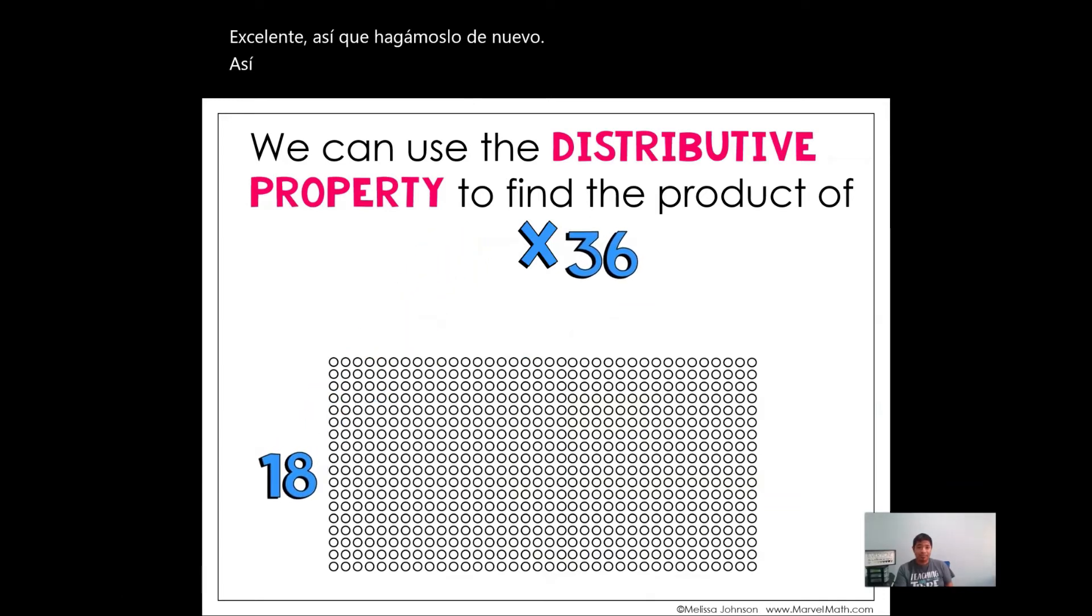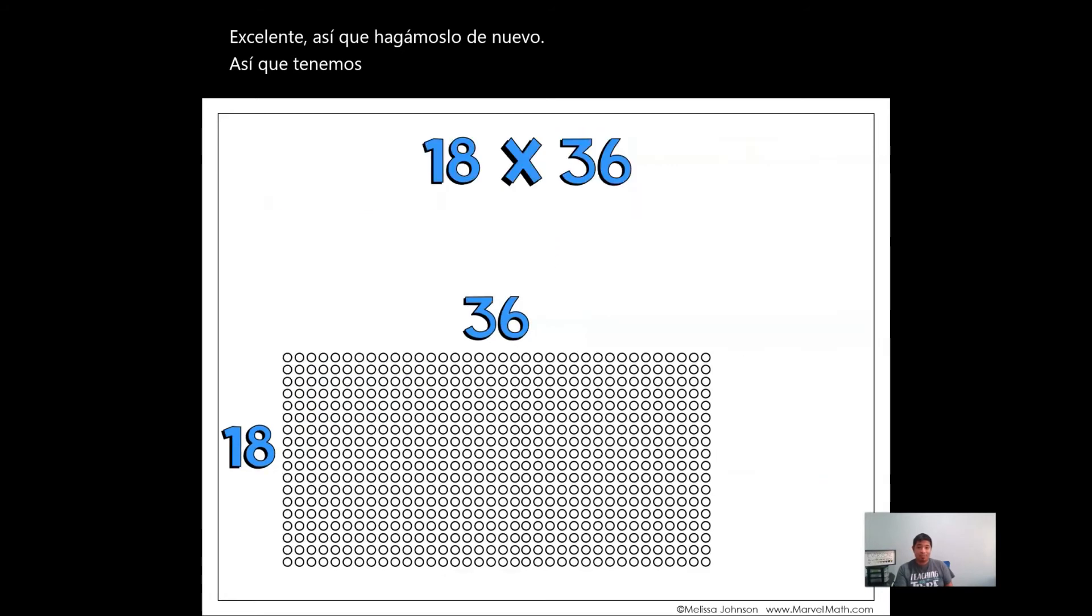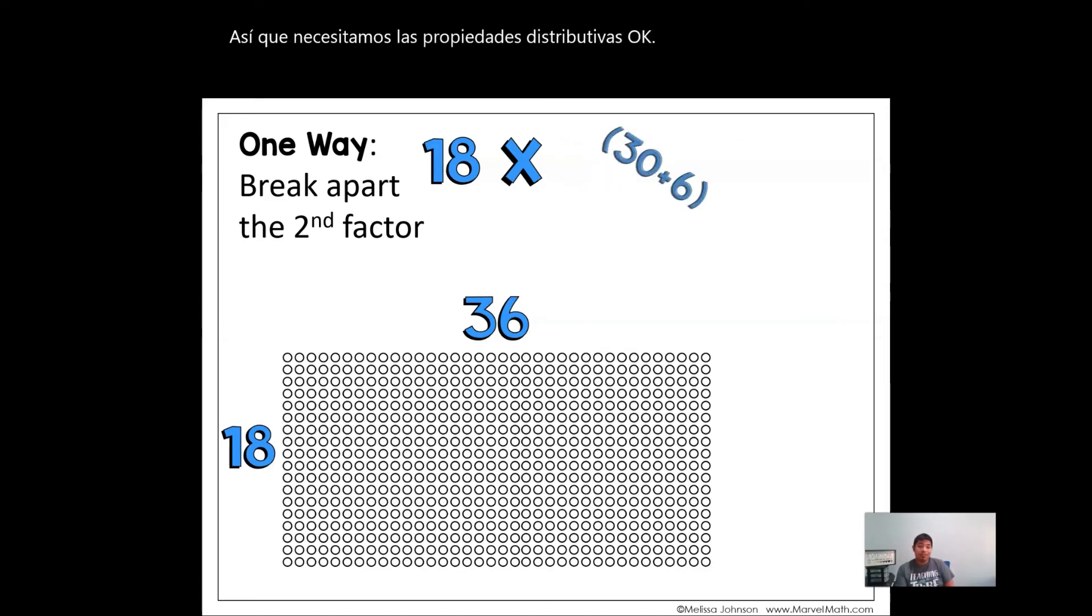We have 18 here, 36 there. Count the rows, count the dots. We're going to break away this. First way is break the second factor. 36 turns into 30 plus 6. Let me break that apart.